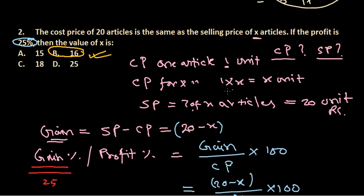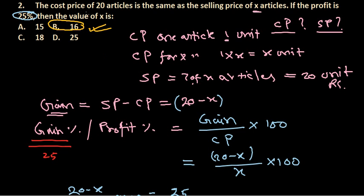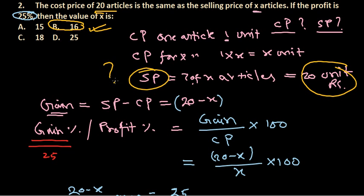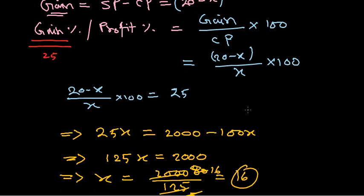The answer is 16, which corresponds to option B. The take-home message: the cost price of 20 articles equals the selling price of X articles. Since you're buying 20 articles at 1 unit each (total 20 rupees) but only selling X articles for the same price, that's where the gain comes from. Getting the selling price as 20 units is the most critical part of this problem.